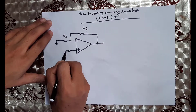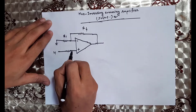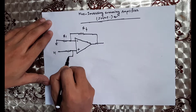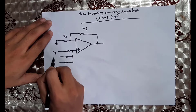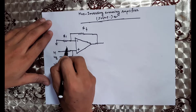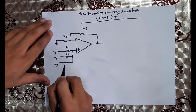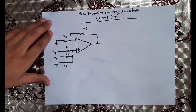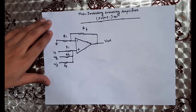If we have three inputs, then we have V1, V2, V3 with resistances R1, R2, and R3 respectively. Then we have the output.